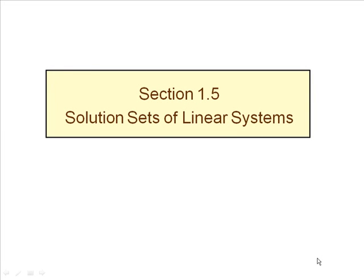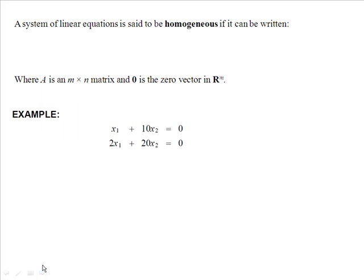Section 1.5, Solution Sets of Linear Systems. A system of linear equations is said to be homogeneous if it can be written as A times our vector x equals the vector 0, where A is an m by n matrix and 0 is the zero vector in our m-space.